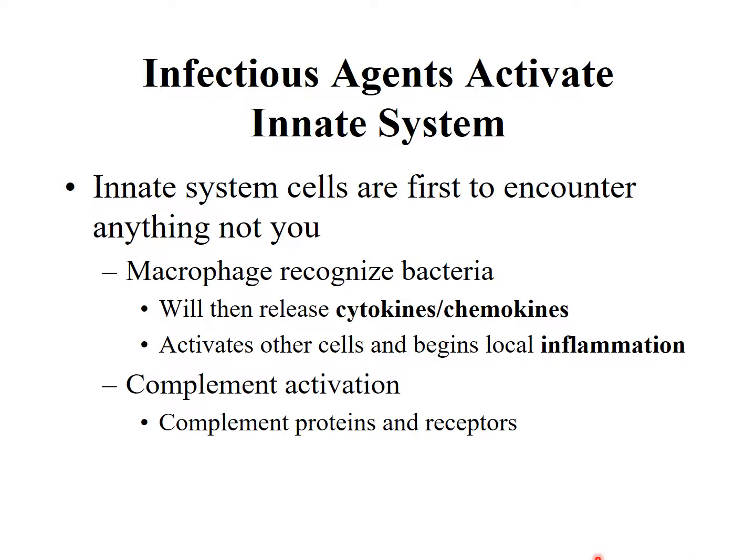Once macrophages come into contact with something not you, they will release cytokines and chemokines. Cytokines are signal flares — they activate other cells, calling them to come. Chemokines are like leaving breadcrumbs; all other cells will follow the breadcrumbs to where that macrophage is, so they now know where the infection is taking place.